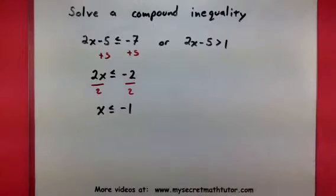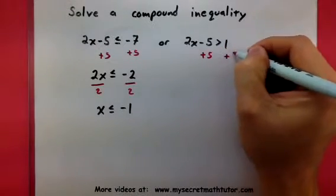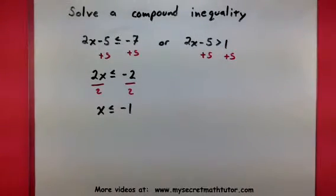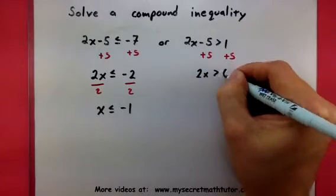Much the same way, I work to isolate X. So add 5 to both sides. And let's see what we get. So 2X is greater than 6.